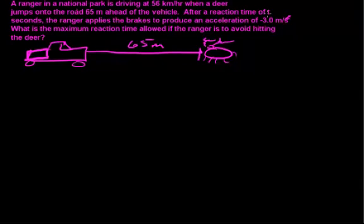First of all, it says after t seconds of reaction time, then he applies the brakes. So a lot of people want to put this negative 3 and the 65 meters for the whole time, assuming that he is braking the entire time. But it very explicitly says right here that he is not accelerating the whole time.